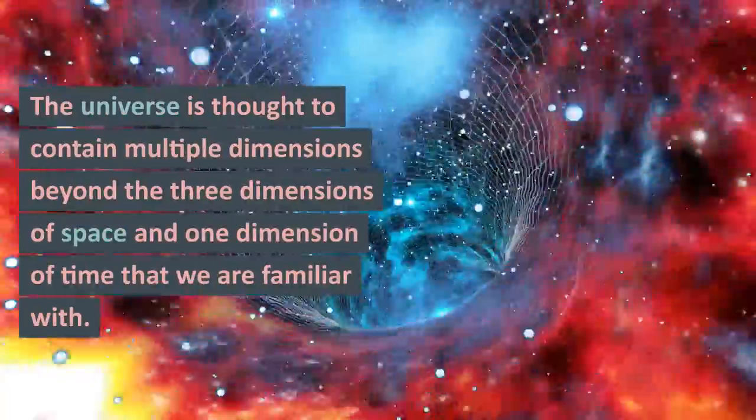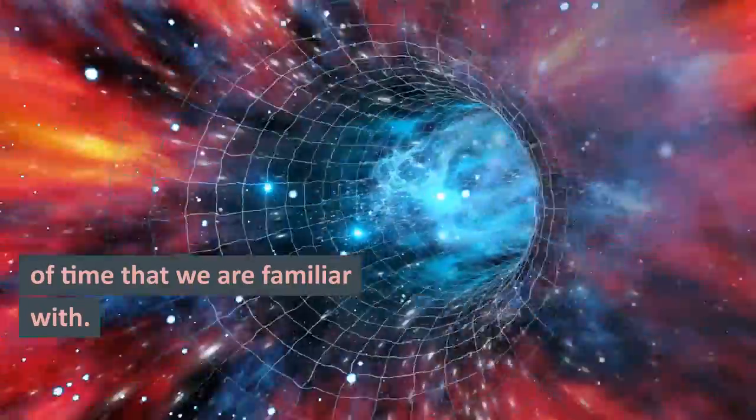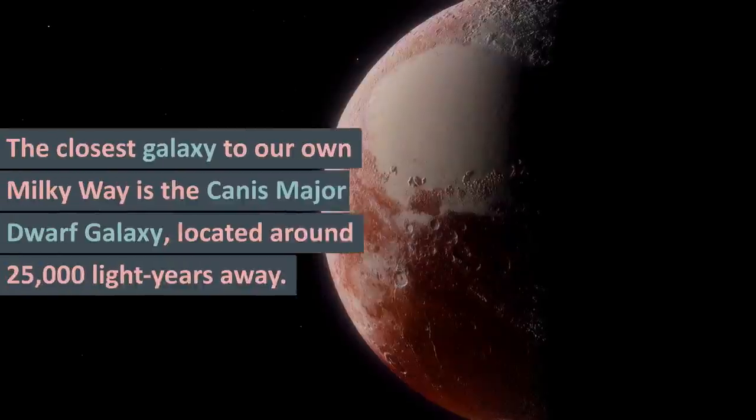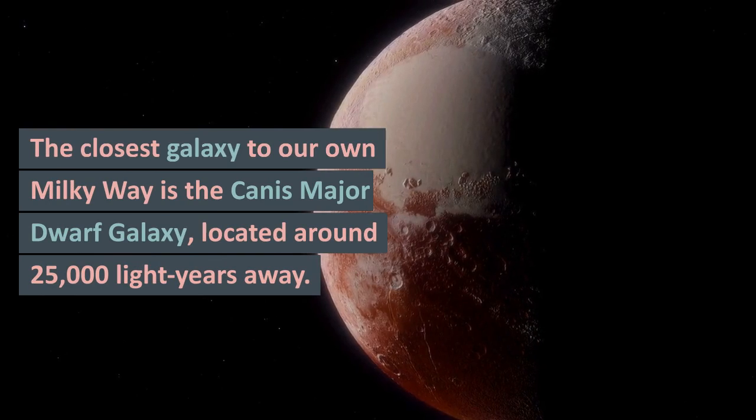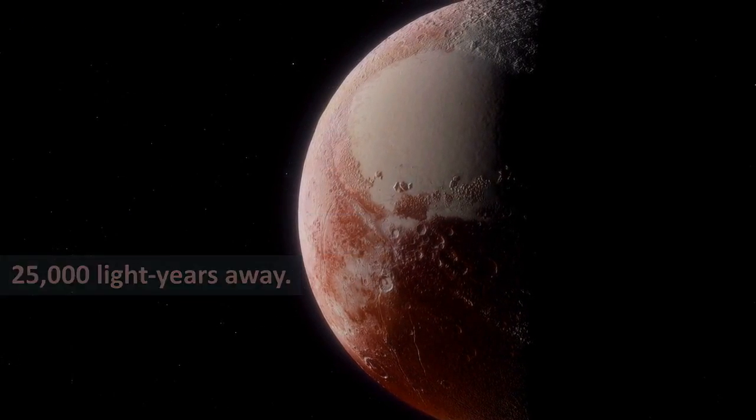The universe is thought to contain multiple dimensions beyond the three dimensions of space and one dimension of time that we are familiar with. The closest galaxy to our own Milky Way is the Canis Major Dwarf Galaxy, located around 25,000 light-years away.